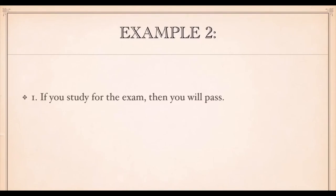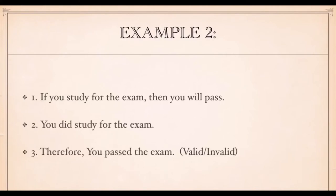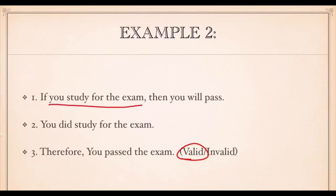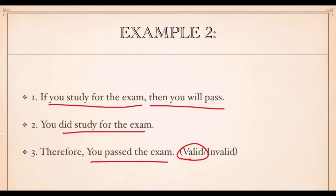Let's take another example. If you study for the exam, then you will pass. Assume the first premise is true and the second premise is true — does the third one necessarily follow? Could you get anything else if you just looked at those two premises and assumed their truth? In this case it would be a valid argument. This simply says: if you do this thing — you study — then this will follow. You do study, therefore you pass. Nothing else could possibly follow from those premises, so it has a valid argument form.